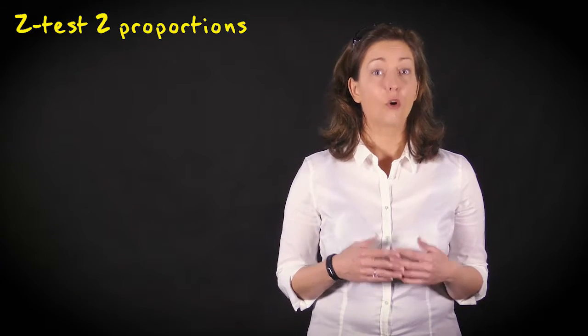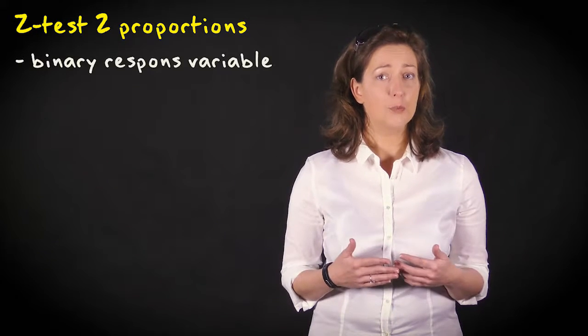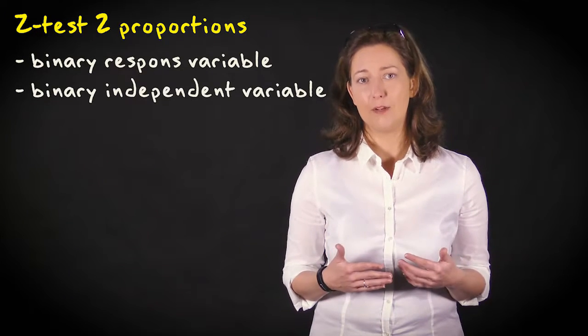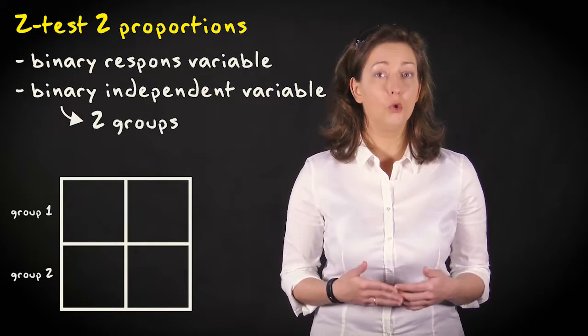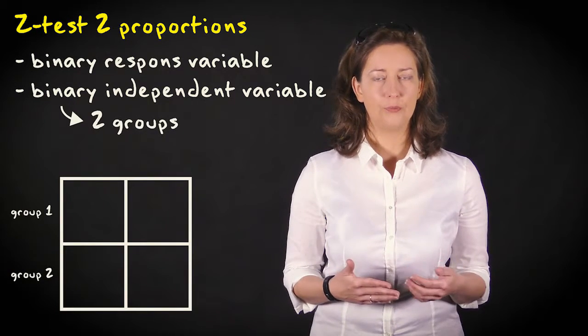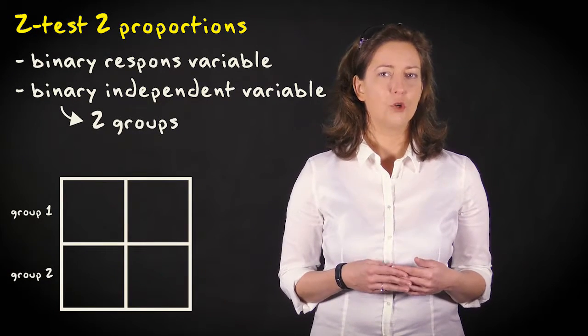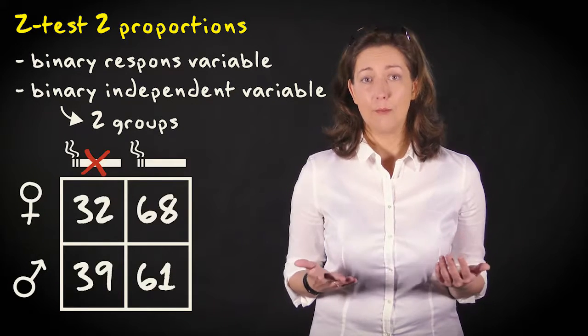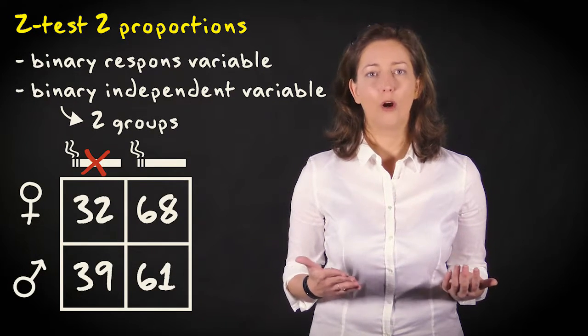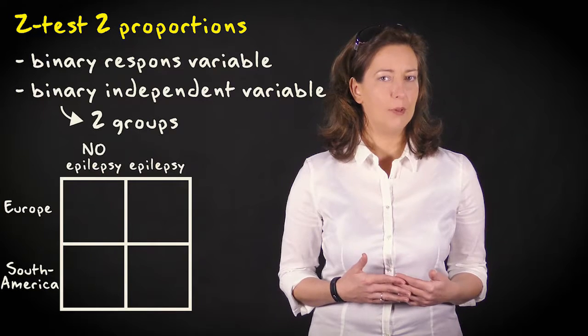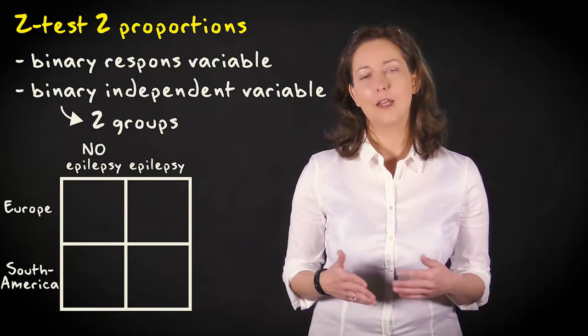We use the z-test or confidence interval for two independent proportions if we have a binary response variable and binary independent variable that distinguishes two independent groups or samples. Examples of research questions could be: are men more often smokers than women, or is the proportion of people with epilepsy larger in Europe than in South America.